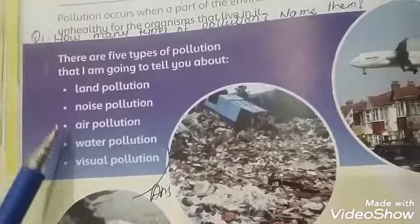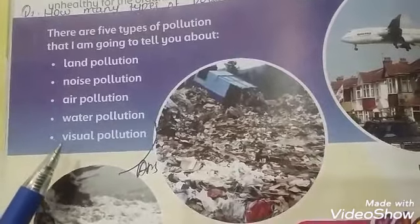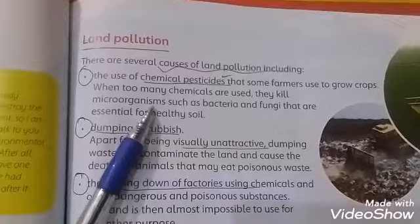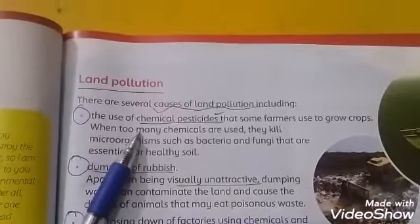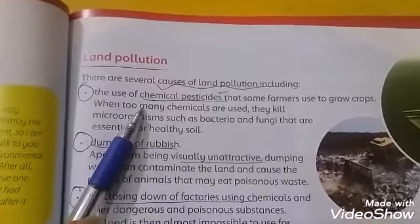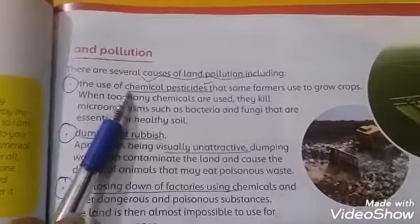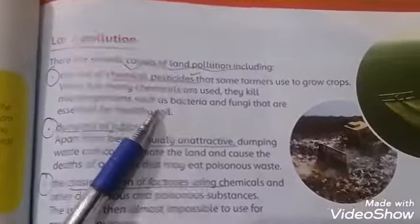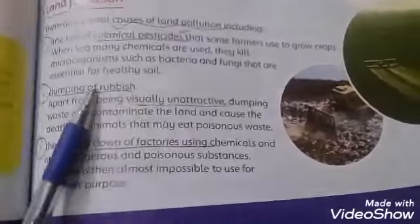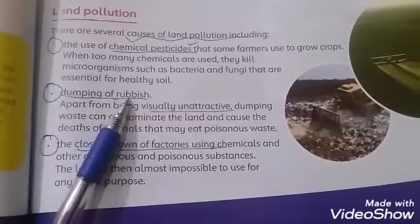There are five types of pollution: land pollution, noise pollution, air pollution, water pollution, and visual pollution. Land pollution is a pollution of the land. There are several causes: the first is the use of chemical pesticides that are used on crops, and the second is the dumping of rubbish — when we throw rubbish in the environment or in streets.